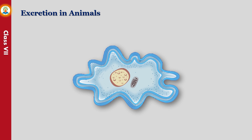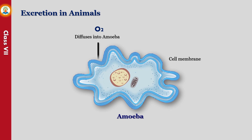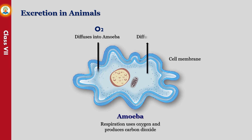Different animals have different mechanisms of excretion. Single-celled organisms such as amoeba, which are aquatic in nature, excrete waste by the simple process of diffusion. Oxygen from the surrounding water diffuses into the cell through the cell membrane. The amoeba then uses the oxygen to break down food into simpler molecules.